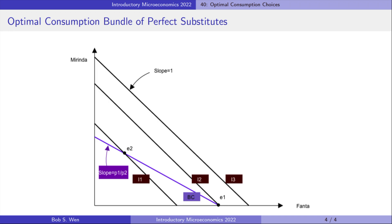Her optimal consumption bundle is E1 because it is on the highest indifference curve I2 that touches the budget constraint. This optimal choice is called the corner solution. At the corner solution, the consumer only consumes Fanta.